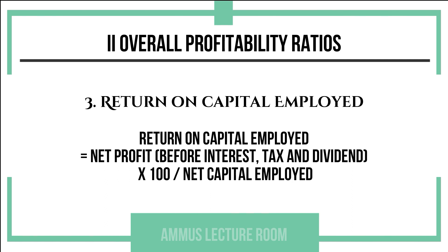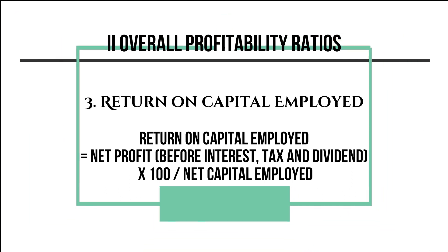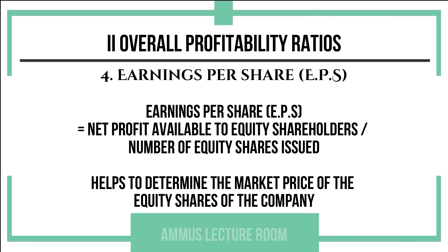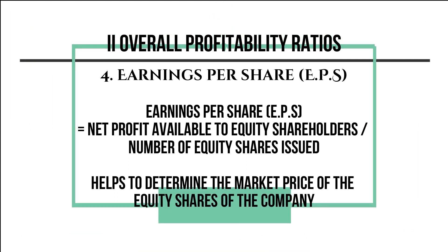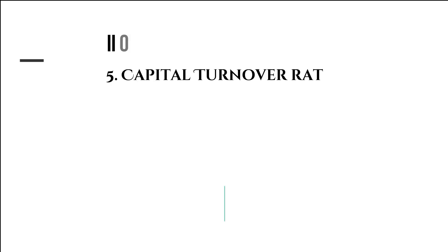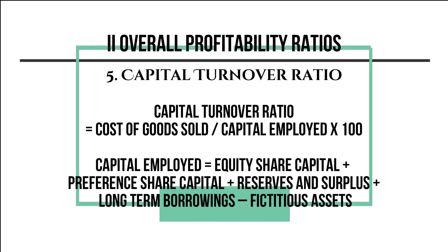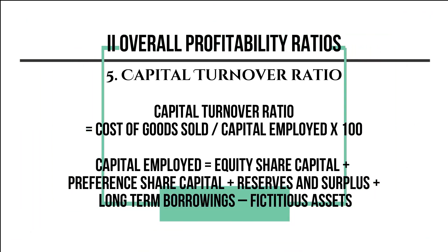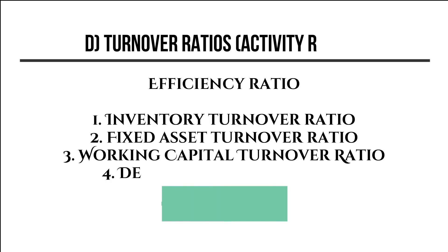Return on capital employed is: net profit before interest, tax, and dividend multiplied by 100 divided by net capital employed. Earnings per share (EPS) equation is: net profit available to equity shareholders divided by number of equity shares issued. EPS helps determine the market price of a company's equity shares. The capital turnover ratio equation is: cost of goods sold divided by capital employed multiplied by 100. Capital employed equals equity share capital plus preference share capital plus reserves and surplus plus long-term borrowings minus fictitious assets.